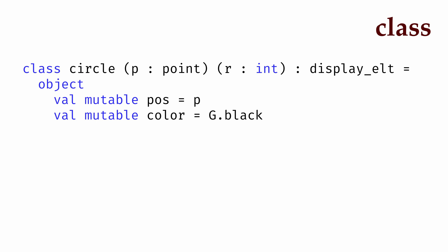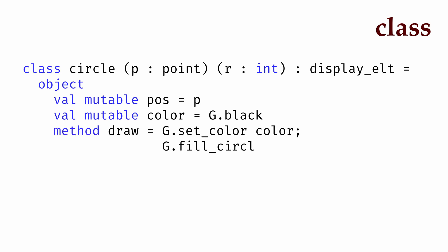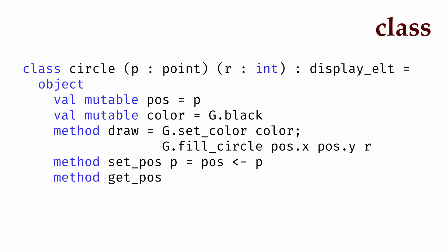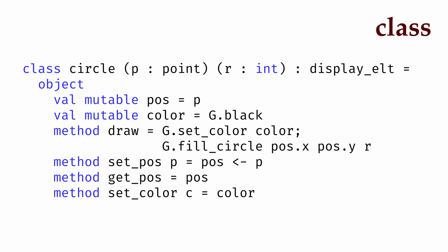In addition to our instance variables, we can define methods to implement the functionality for our object. set_pos will be a method that accepts an argument point p, and once invoked, the method will update the value stored in the pos instance variable to be this new value p. Note that we use the left arrow syntax in objects to update an instance variable. get_pos will be a method that just returns the value of the pos instance variable. Our methods for set_color and get_color are similar — one updates an instance variable, the other returns the value stored at that instance variable. Once we conclude with the keyword end, we've finished the definition of our circle class.